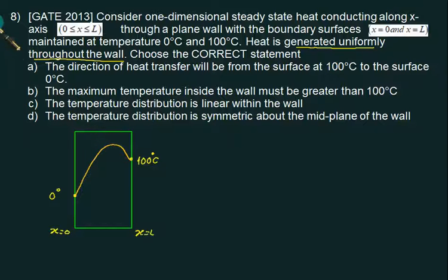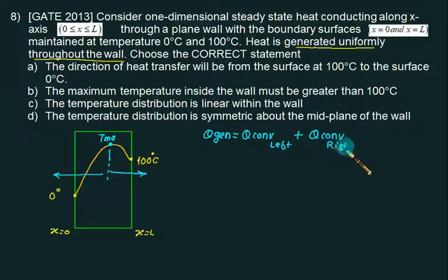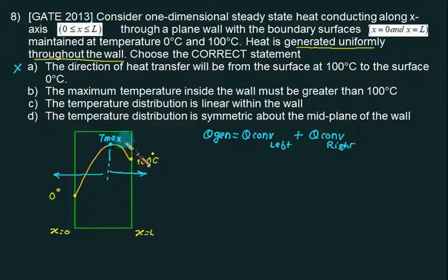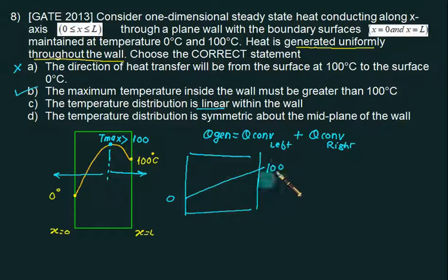Statement A is wrong because partially heat is transferred from the maximum temperature toward 100°C, and the remaining generated heat passes to the other face — Q_generation equals Q from left side plus Q from right side. Since the maximum temperature occurs between the plates, heat transfers on both sides. Statement B — maximum temperature inside the wall must be greater than 100°C — is true. Statement C says the temperature distribution is linear, which is wrong; with generation we have a second-order parabola. A straight line is only possible without generation.